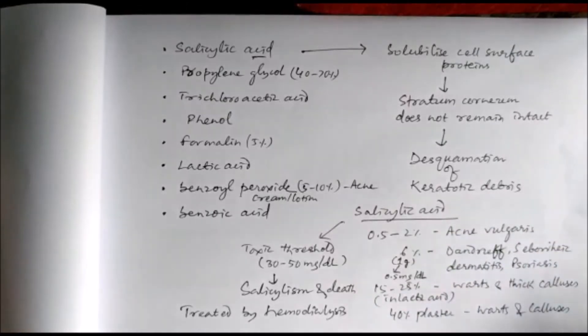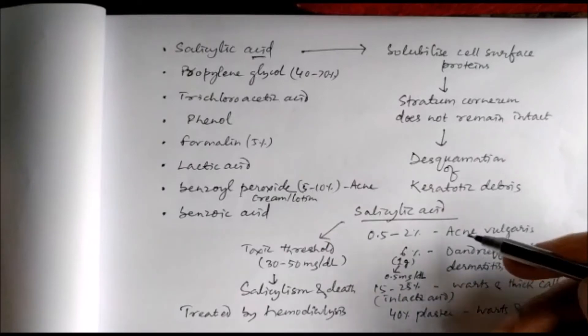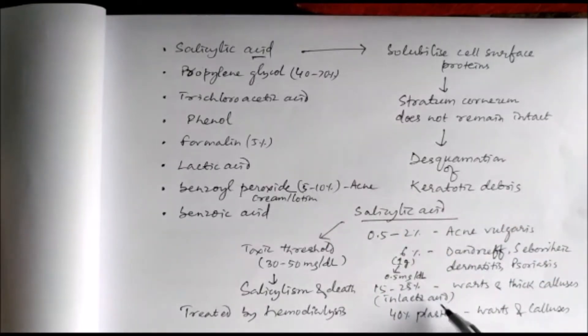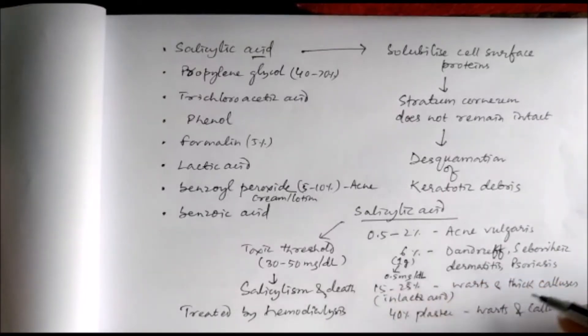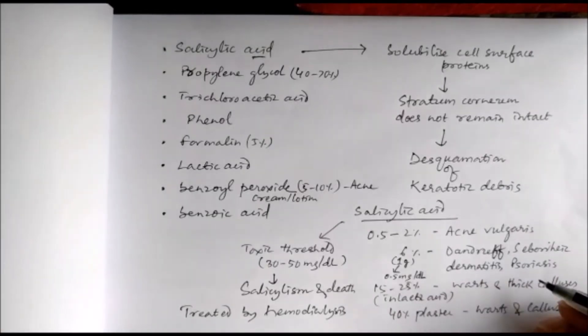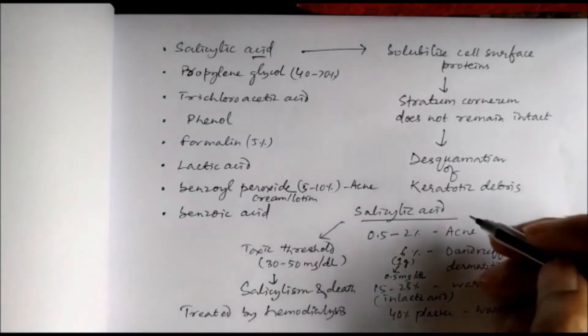Salicylic acid is used in different concentrations: 0.5 to 2% will be effective against acne vulgaris; at 6% it will be effective against dandruff, seborrheic dermatitis, and psoriasis; at 15 to 25% in lactic acid to be effective against warts and thick calluses. Again, the 40% plaster is also effective against warts and calluses.